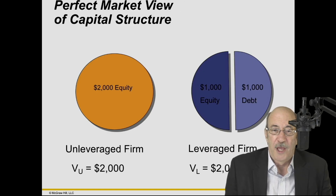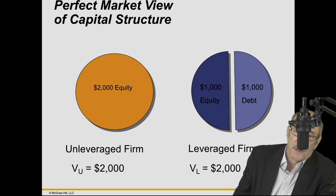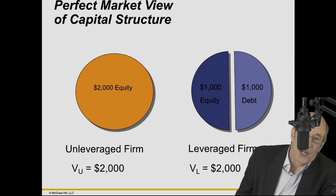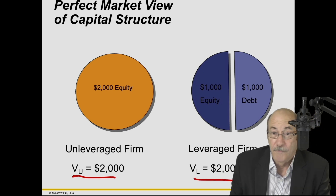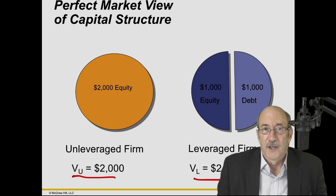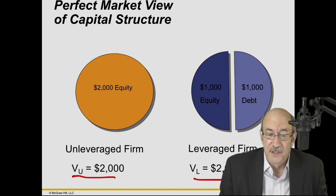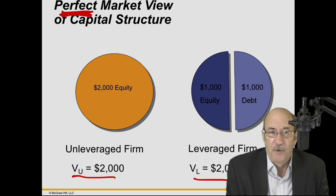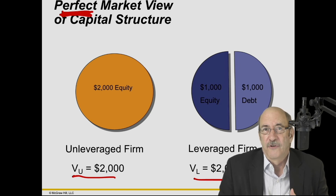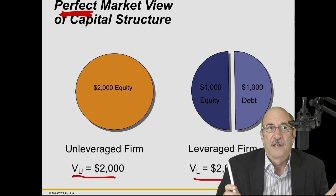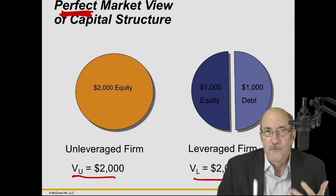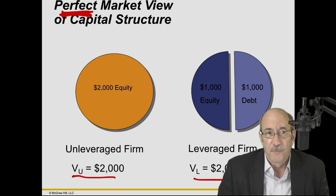Using a pie diagram, the value of the unlevered firm and the value of the levered firm are identical — it's just who's funding what. Remember, this is in perfect capital markets: no taxes, no transaction costs, no agency costs, no signaling, no asymmetric information, and no other imperfections in the marketplace.